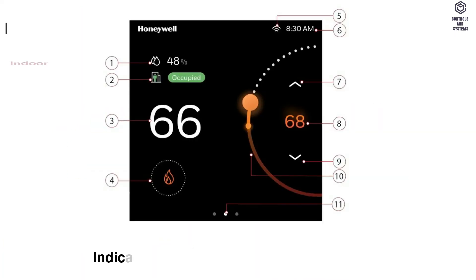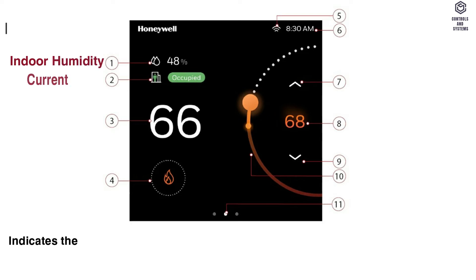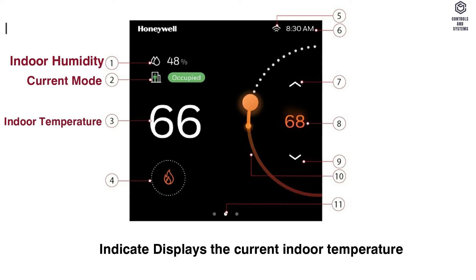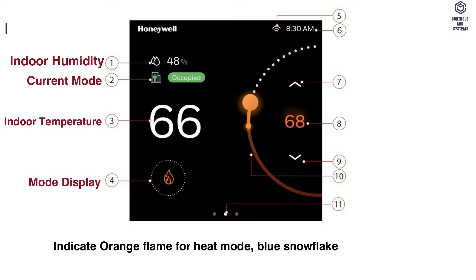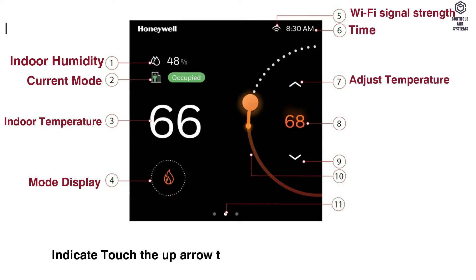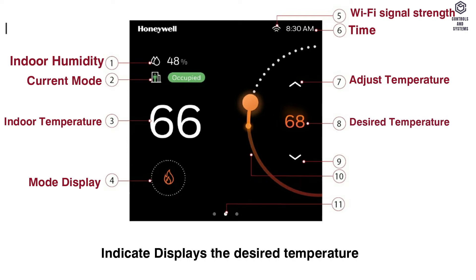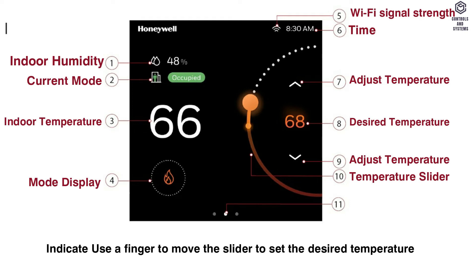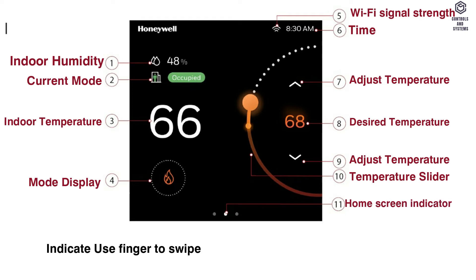Home Page: 1 indicates the current indoor humidity. 2 indicates the current set point status — occupied, unoccupied, standby, or temporary. 3 indicates the current indoor temperature. 4 indicates an orange flame for heat mode or blue snowflake for cool mode. 5 indicates Wi-Fi signal strength. 6 indicates time. 7 — touch the up arrow to increase the desired temperature. 8 displays the desired temperature. 9 — touch the down arrow to decrease the desired temperature. 10 — use a finger to move the slider to set the desired temperature. 11 — use a finger to swipe left or right to display more options.